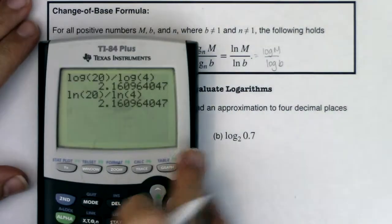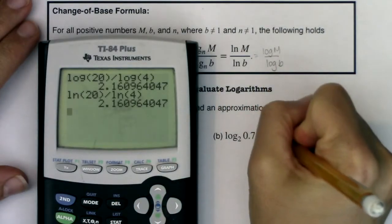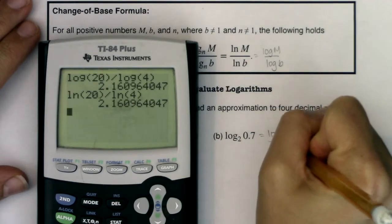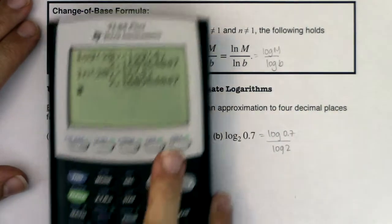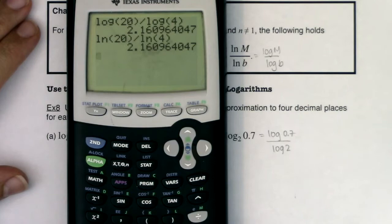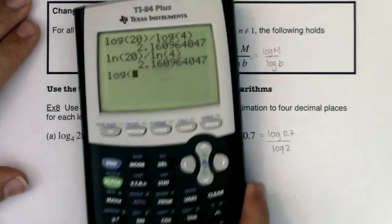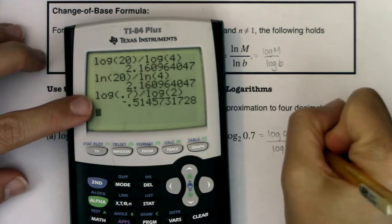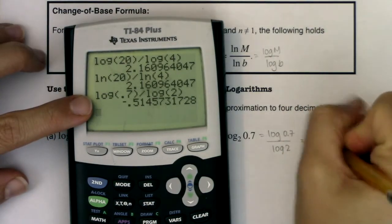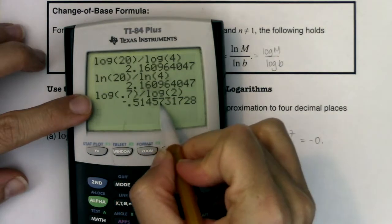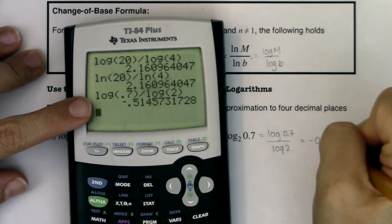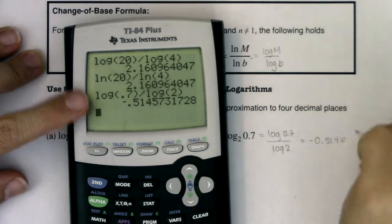All right, similarly over here, we can make this log of 0.7 over log of 2, and if we calculate that on our calculator, we're going to get log of 0.7 divided by log of 2, and I am looking at negative 0.0. I would go 4 decimals, look at the 5th one, it's telling me to round up, so we will go 5, 1, 4, 6.